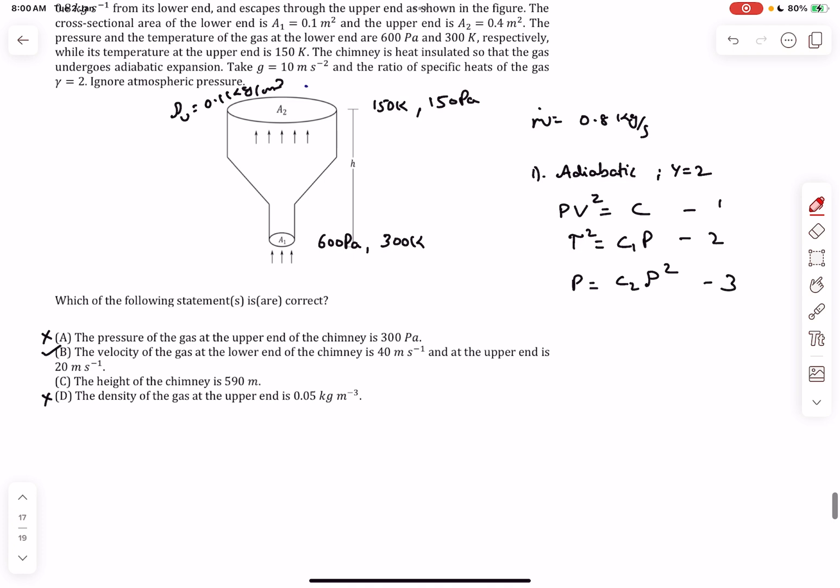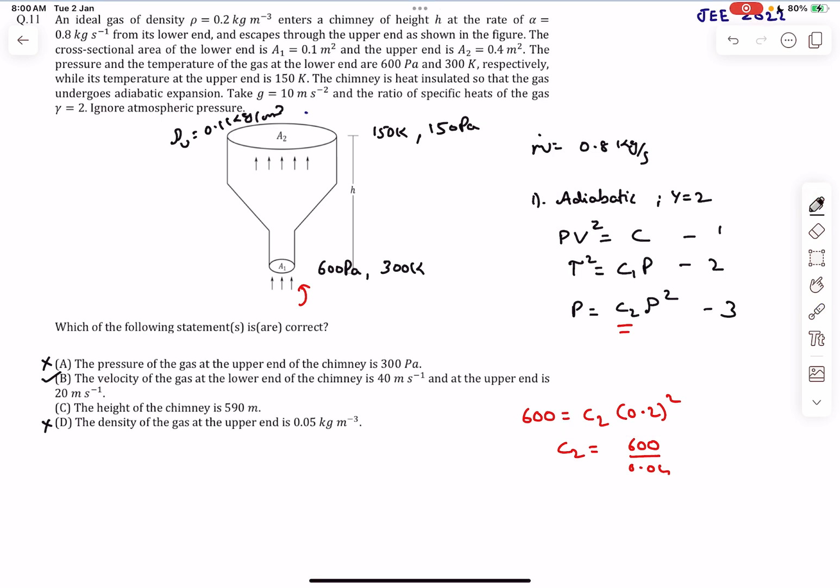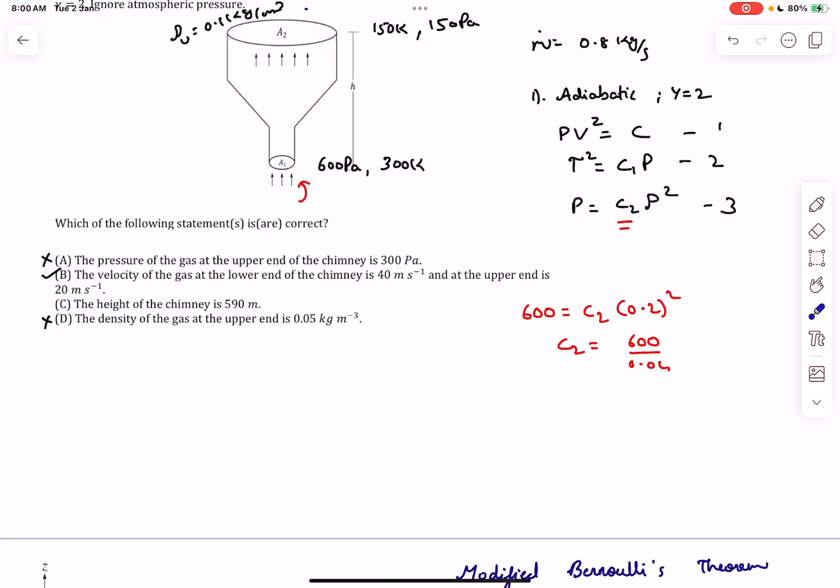How do we evaluate C₂? We can easily evaluate using the boundary condition at the inlet. We know the pressure at the inlet is 600 and the density at the inlet is 0.2, so C₂ becomes 600/0.04. I'm not evaluating it because the values will cancel out. Let's assume a streamline between end 1 and end 2 and apply our Bernoulli's theorem.